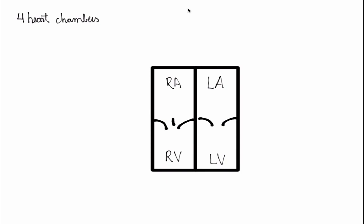We're going to establish certain rules here to make it easier to understand and memorize. The first rule is that everything in red represents oxygenated blood and everything in blue represents deoxygenated blood — oxygen rich or oxygen depleted blood.